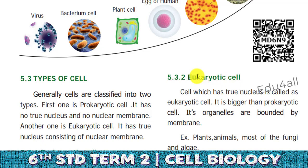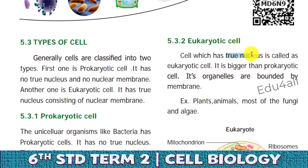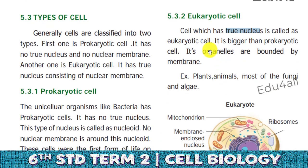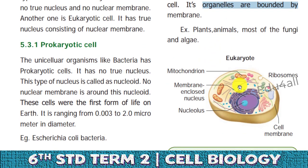Next we are going to see eukaryotic organisms. 'Eu' means true, so eukaryotic cells possess a true nucleus. These cells are bigger than prokaryotic organisms. They have cell organelles bounded by membranes. Examples include mostly plant cells, animal cells, fungi, and algae.